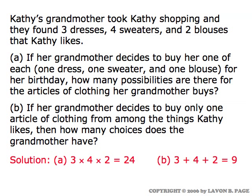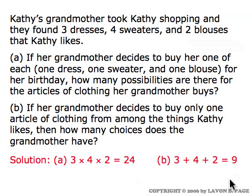In part B, her grandmother is going to buy only one article of clothing from all the categories combined. The three dresses, four sweaters, and two blouses make three plus four plus two — nine articles of clothing total. The grandmother's going to buy one of those nine articles, so the number of possibilities is nine. The key difference is that in part A we multiply because of the multiplication principle, while in part B we add because we're simply combining all the articles of clothing together and choosing one from the whole batch.